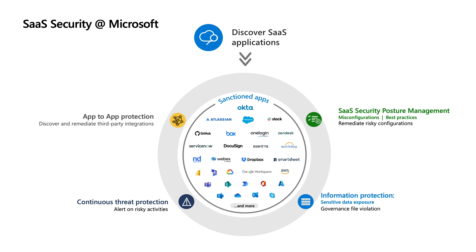So discovery, information protection, and threat protection are part of Defender for Cloud Apps, and App Governance is an add-on? Exactly. App Governance is an add-on, and the SSPM capabilities are not an add-on — they come directly within Defender for Cloud Apps. We see SSPM as a new pillar within our world of SaaS security.